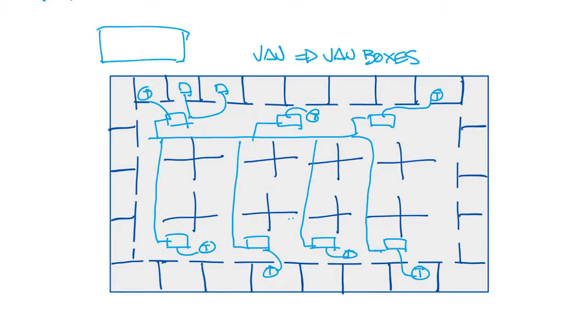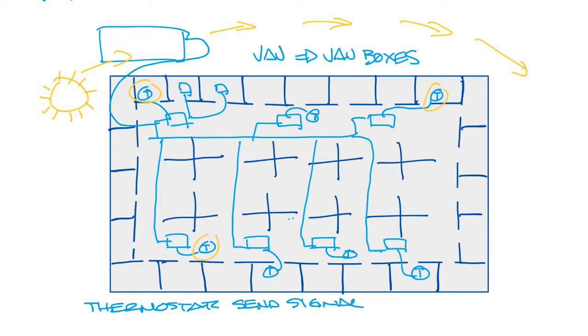So if one zone gets cold, its VAV box will close down and reduce the amount of air going to that space to maintain comfort in that space while the other spaces are doing the same thing to maintain comfort in their space. This way all the zones are comfortable and as the sun comes over the building, the thermostats send a signal to the VAV boxes and the VAV boxes respond by modulating the airflow to each of their spaces.